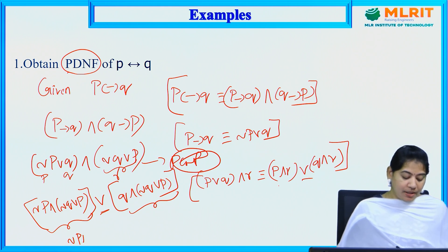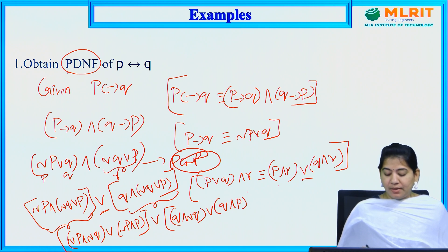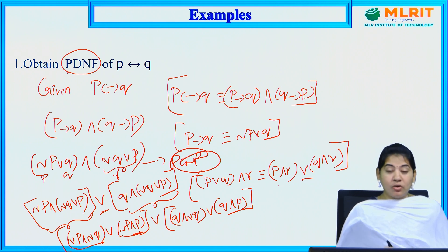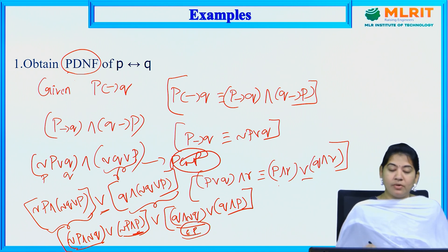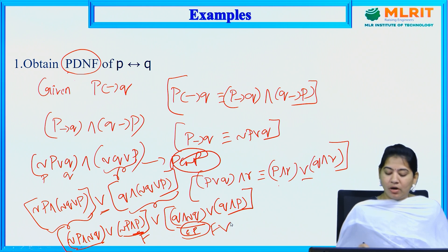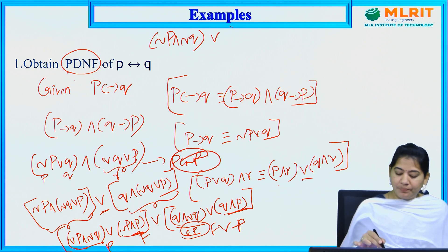Expanding further: (¬P ∧ ¬Q) ∨ (¬P ∧ P) ∨ (Q ∧ ¬Q) ∨ (Q ∧ P). Here, ¬P ∧ P is a contradiction, equal to F, and Q ∧ ¬Q is also F. So those terms drop out. The resulting answer is (¬P ∧ ¬Q) ∨ (Q ∧ P).